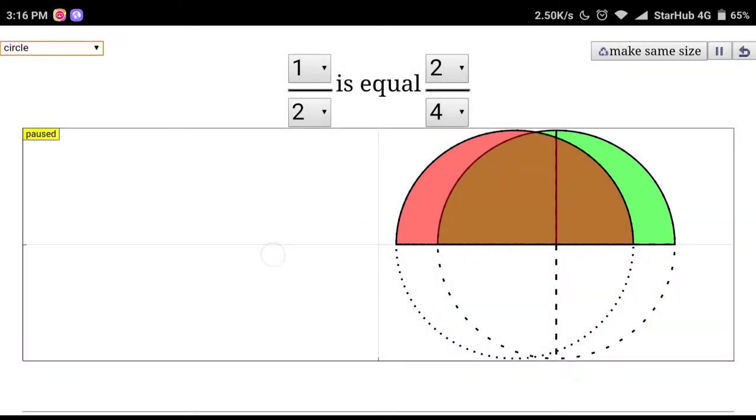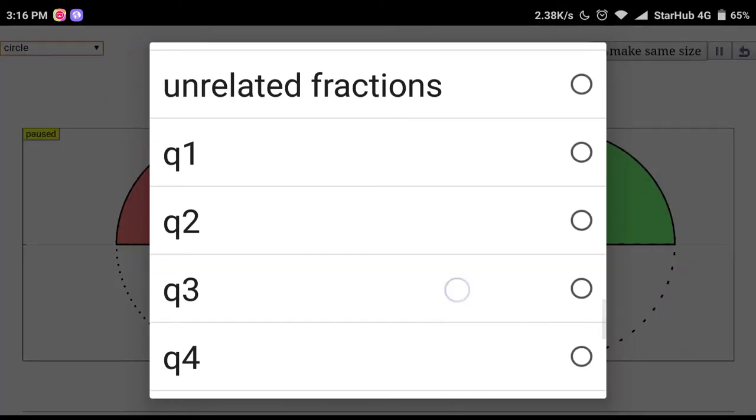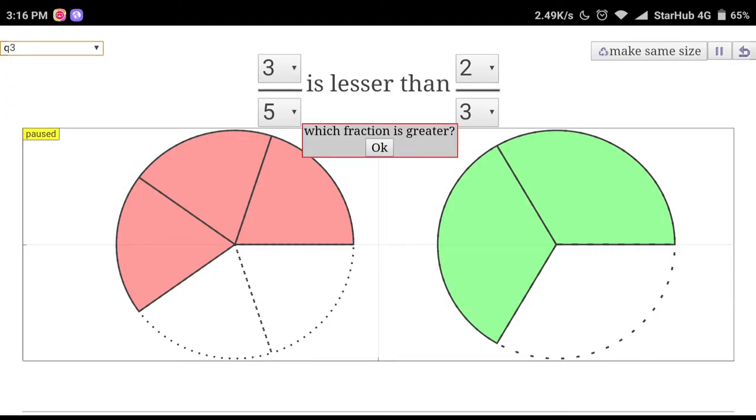In this example, we can use unrelated fractions. Unrelated fractions are typically difficult for students because of the denominator. So we have to click on the button, make same size.